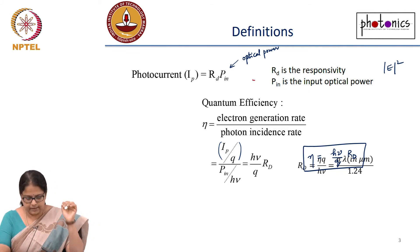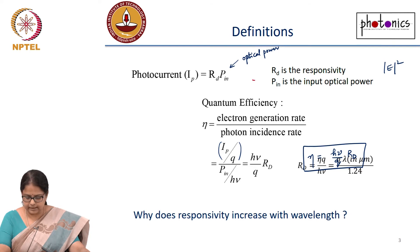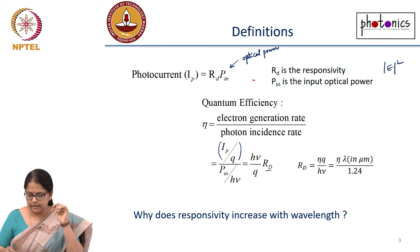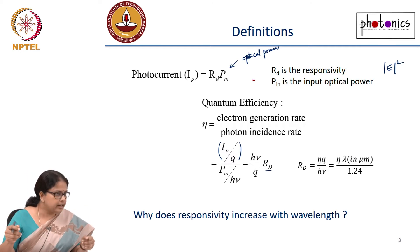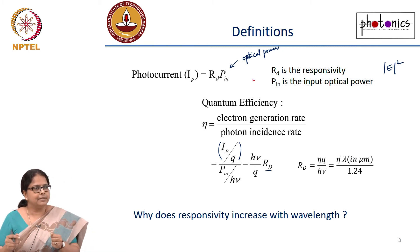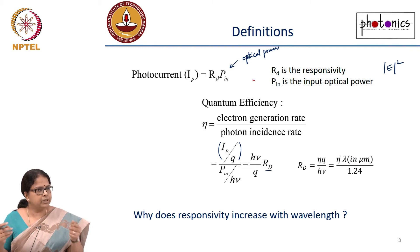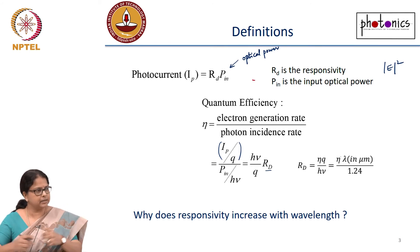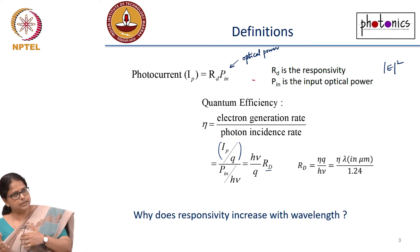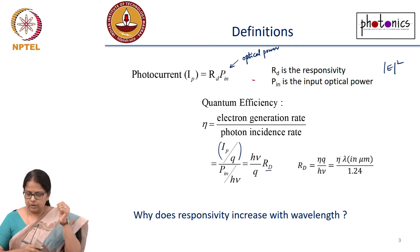This can be simplified to write R_d = ηQ/(hν). Responsivity is the external parameter that can be measured — I can put in a certain power and measure the current coming out. Quantum efficiency is what is happening internally in the system. So the measurable quantity is responsivity, and we are linking it to the internal process.